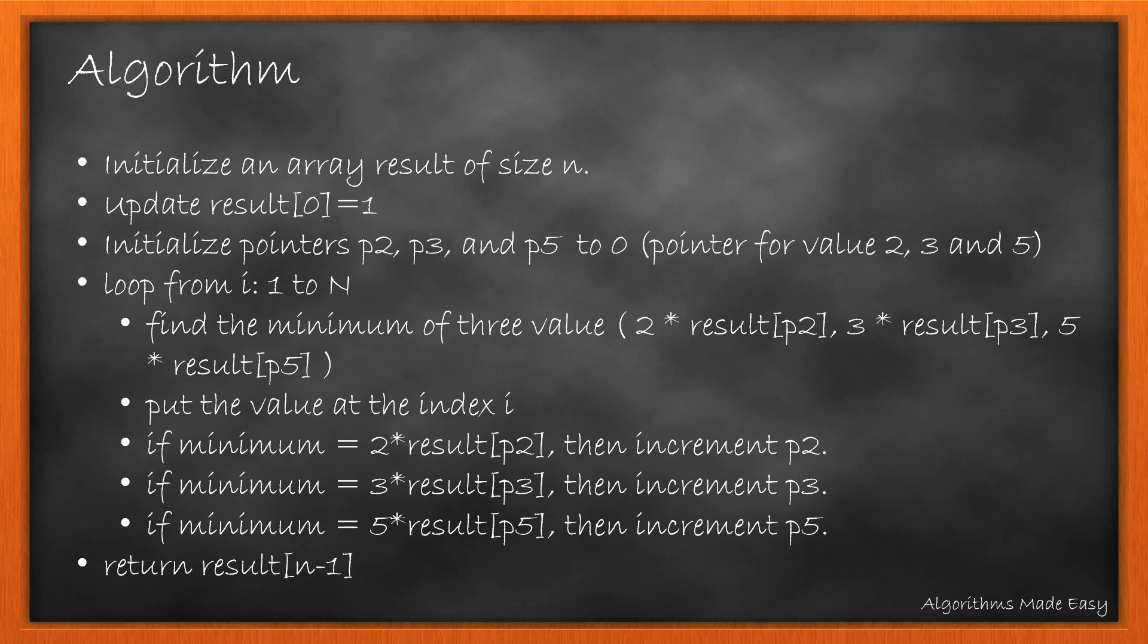Here is the algorithm we followed. Let's go through it once more. We will initialize an array result of size n. Then we update 0th index with 1. We will also initialize 3 pointers for all 3 factors and initialize them to 0. Now we will loop from 1 to n. We will first find the minimum of the 3 ugly numbers formed by 2, 3, and 5. We put the value into the result array. Whichever value matches the minimum needs its pointer to be updated so that it gives next ugly number in next iteration. At the end we return the last index value.